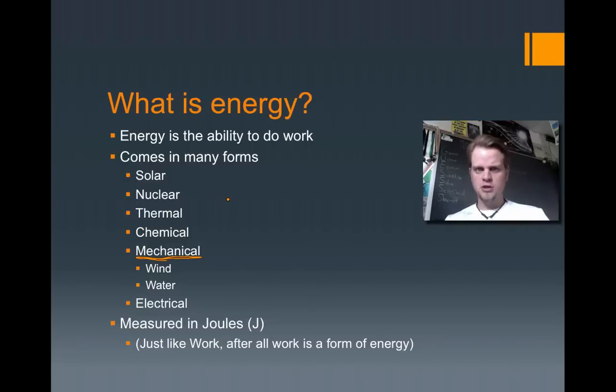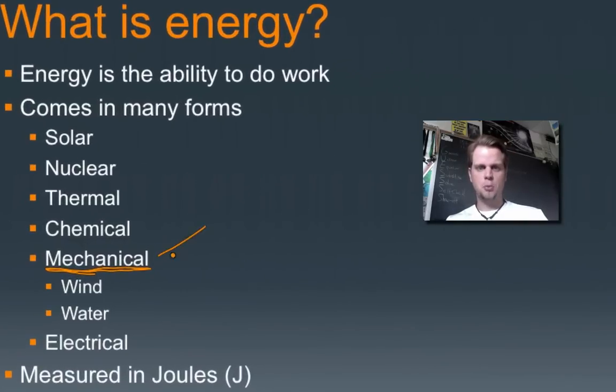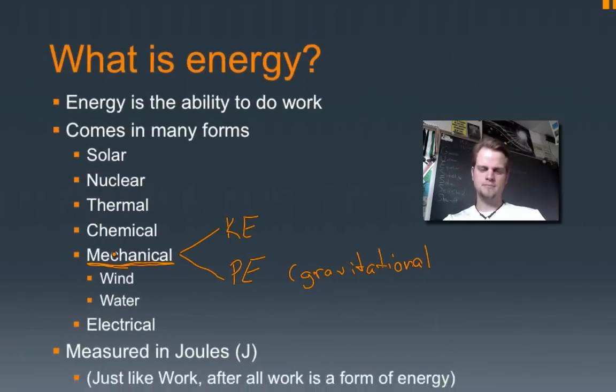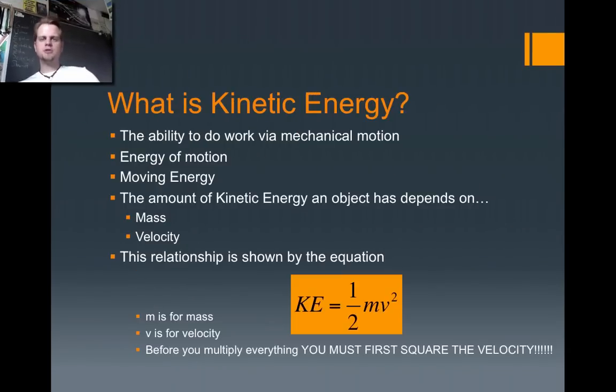Now, what we're going to start focusing on, though, is this mechanical part, which breaks into two categories. You have what's called kinetic energy, or KE, and you have potential energy, in particular, gravitational. We're going to focus on that in physics class, although you can talk about solar and all these other energies in physics class. But for right now, we're going to focus on the mechanical part. All right, so let's start with the first one, which is kinetic energy.